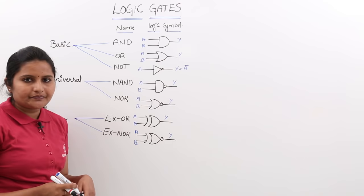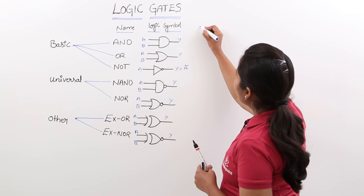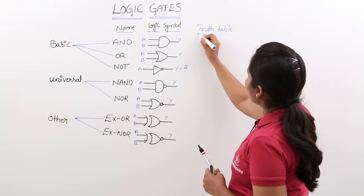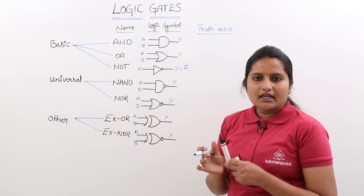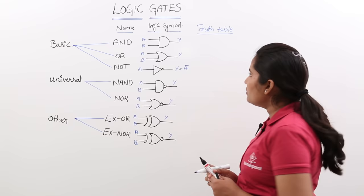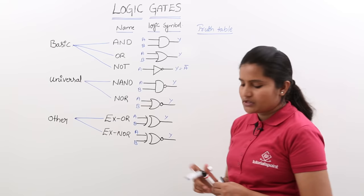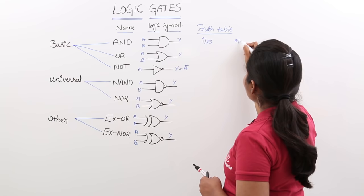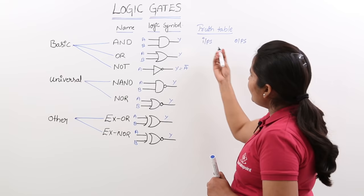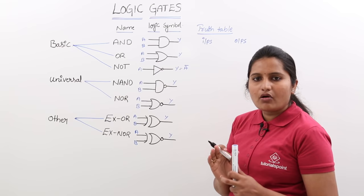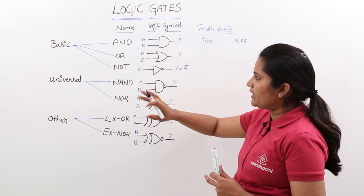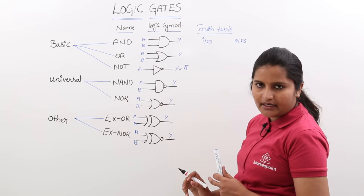Now we will move to truth tables. The truth table provides the input-output relation. It defines what the output of a logic gate will be for a particular combination of inputs. A truth table always contains columns for inputs and outputs. Whatever inputs we have at the gate — for example, for AND gate or OR gate the inputs are A and B — the truth table includes A and B in the input columns.